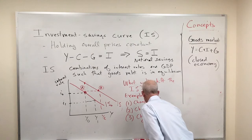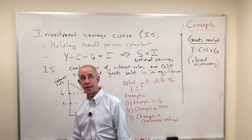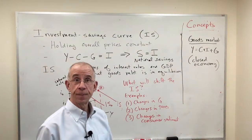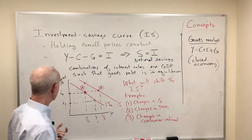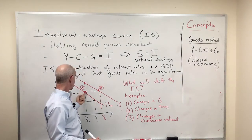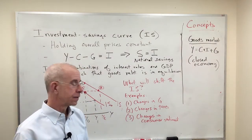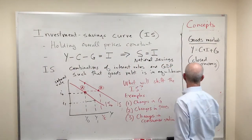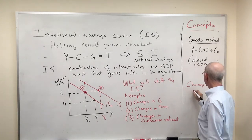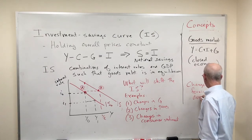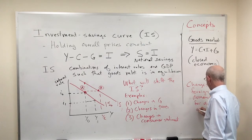What else might shift the IS curve? Changes in consumer sentiment: if I'm suddenly very optimistic about the future as a consumer and I want to spend more, that will increase aggregate demand, and either aggregate demand rises or interest rates rise to choke off my demand — the IS curve shifts to the right. Also, changes in foreign demand for domestic goods will affect the IS curve. If foreigners want to buy more of our goods, that increases aggregate demand and has the same dynamic.